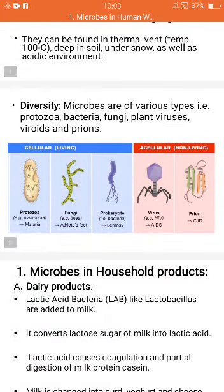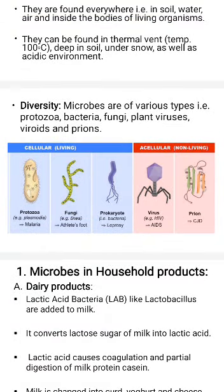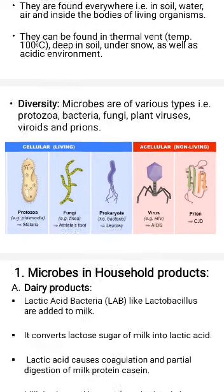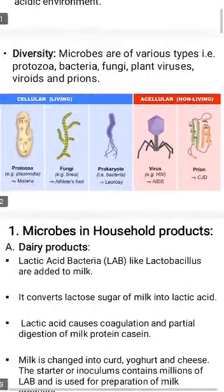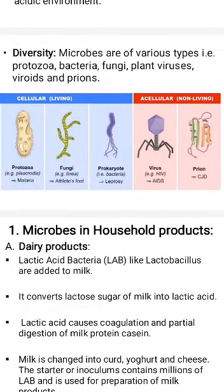Microbes are classified into the following types: protozoa, bacteria, fungi, plant viruses, viroids, and prions. The diagrams show protozoa such as malaria parasite, fungi, prokaryotes like bacteria, HIV virus, and prions. The first diagram is of Paramecium, which is a unicellular organism. Now let's look at the benefits of microbes, starting with microbes in household products.